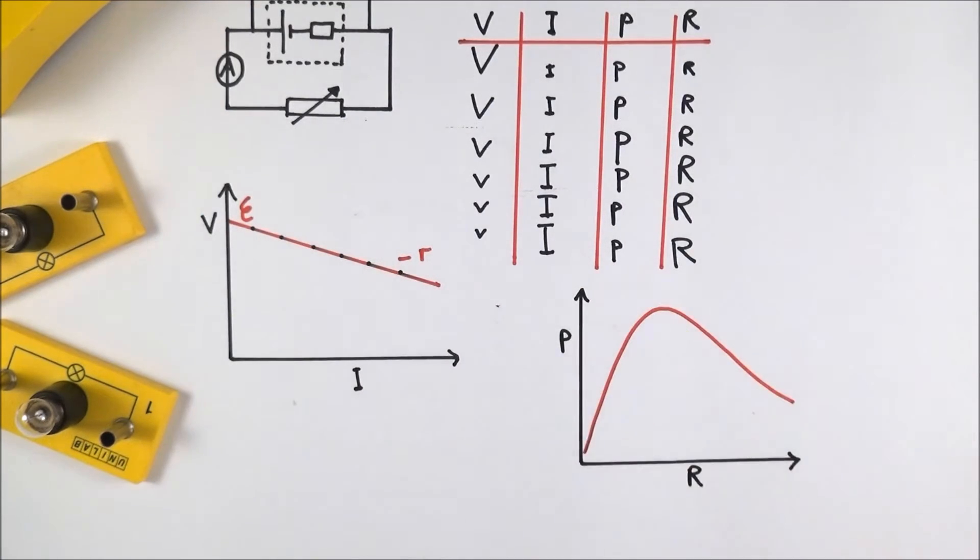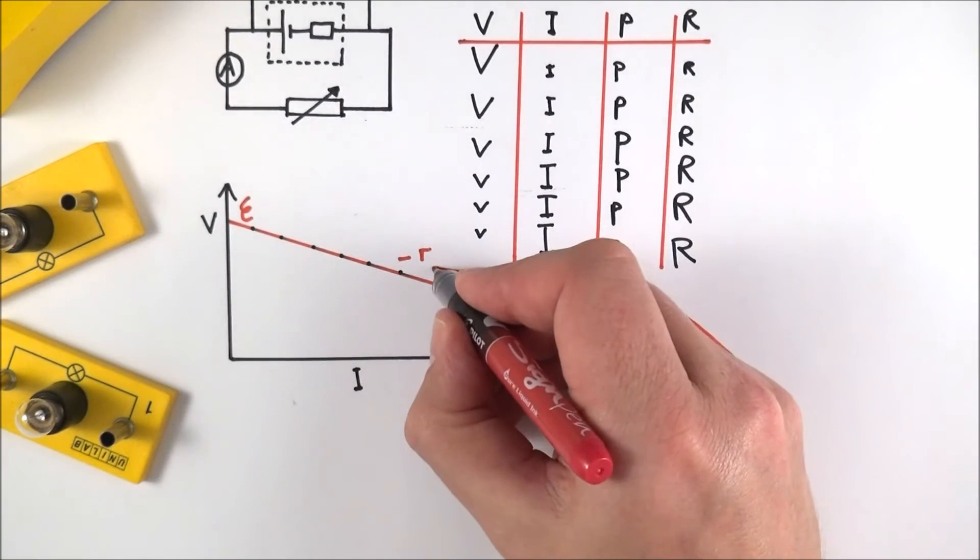As you increase the resistance, that then drops off. Actually, what you might find is this is somehow linked to this graph over here.